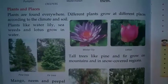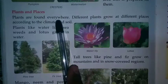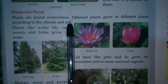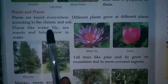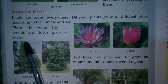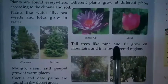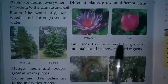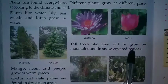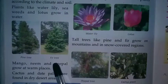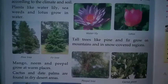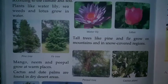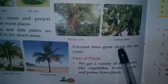Plants and Places. Plants are found everywhere. Different plants grow at different places according to the climate and soil. Plants like water lily, seaweeds and lotus grow in water. Tall trees like pine and fir grow on mountains and in snow-covered regions. Mango, neem and peepal grow at warm places. Cactus and date palms are found in dry desert areas. Coconut trees grow along the seacoast.